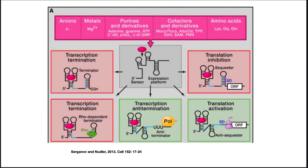There are numerous examples of riboswitches in bacteria. Anions, metals, purines, cofactors, and amino acids can all serve as riboswitches and regulate a number of biosynthesis pathways. For example, thiamine pyrophosphate will bind to the messenger RNA that encodes the enzymes for its own synthesis and shut off translation of the messenger RNA.